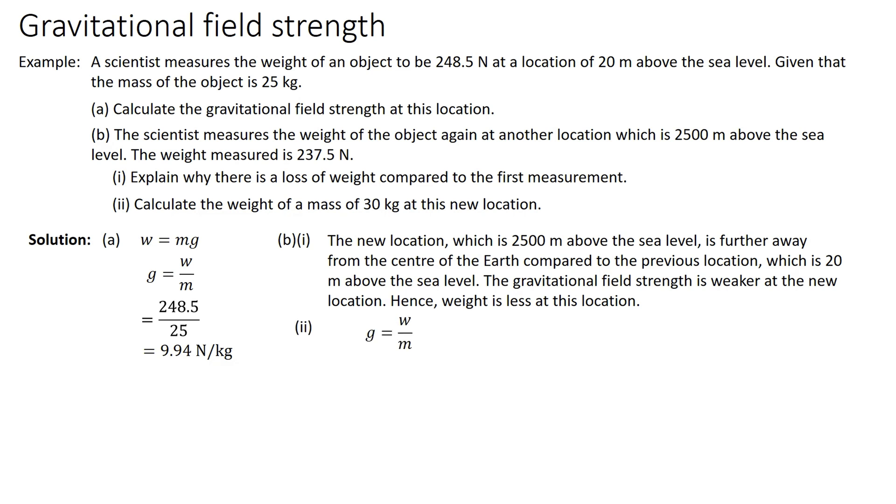For part (ii), g is W over m. We find the new g where W is 237.5 over 25 kilograms and we get 9.5 Newton per kg. Therefore, the weight for the second mass is 30 times 9.5 and we get 285 Newton.